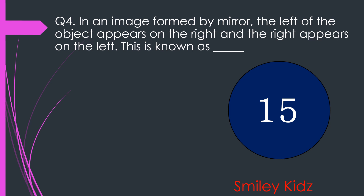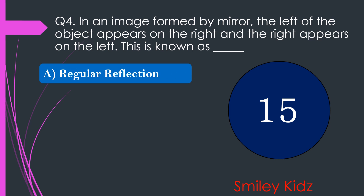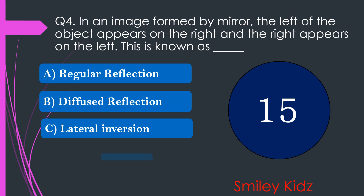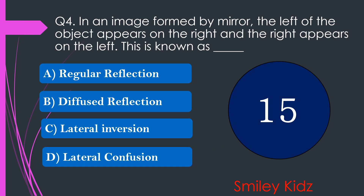Question number 4. In an image formed by a mirror, the left of the object appears on the right and the right appears on the left. This is known as dash. The options are A. Regular reflection, B. Diffuse reflection, C. Lateral inversion, or D. Lateral confusion. Your time starts now.